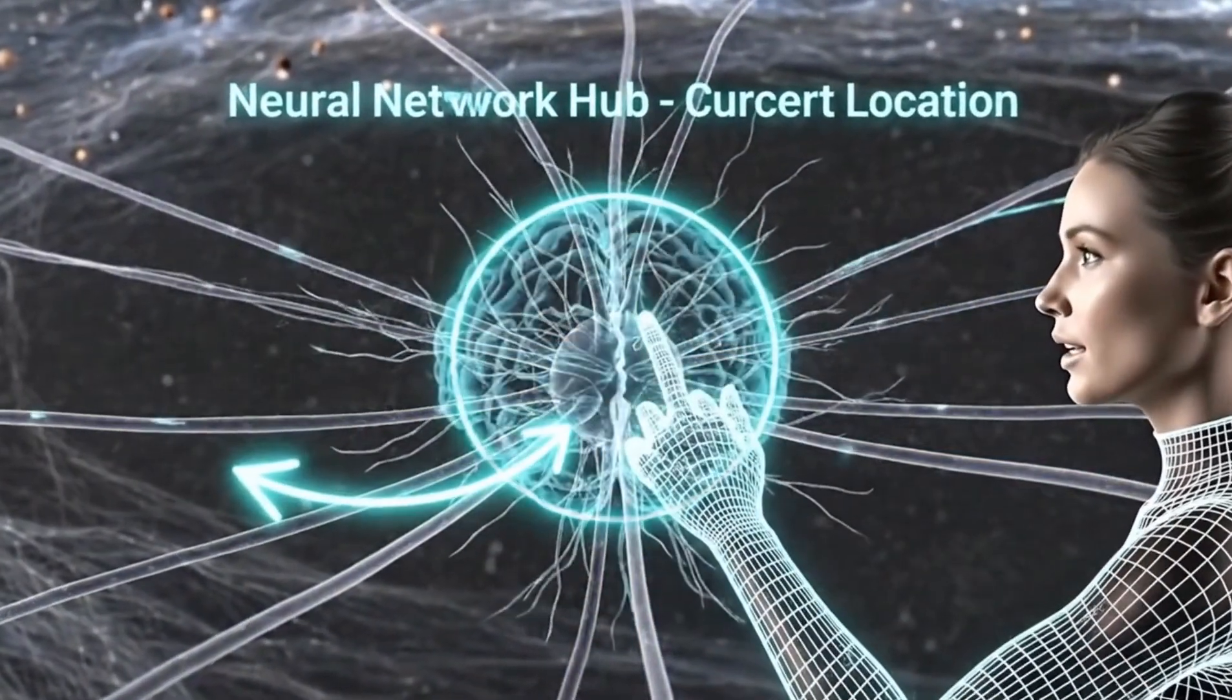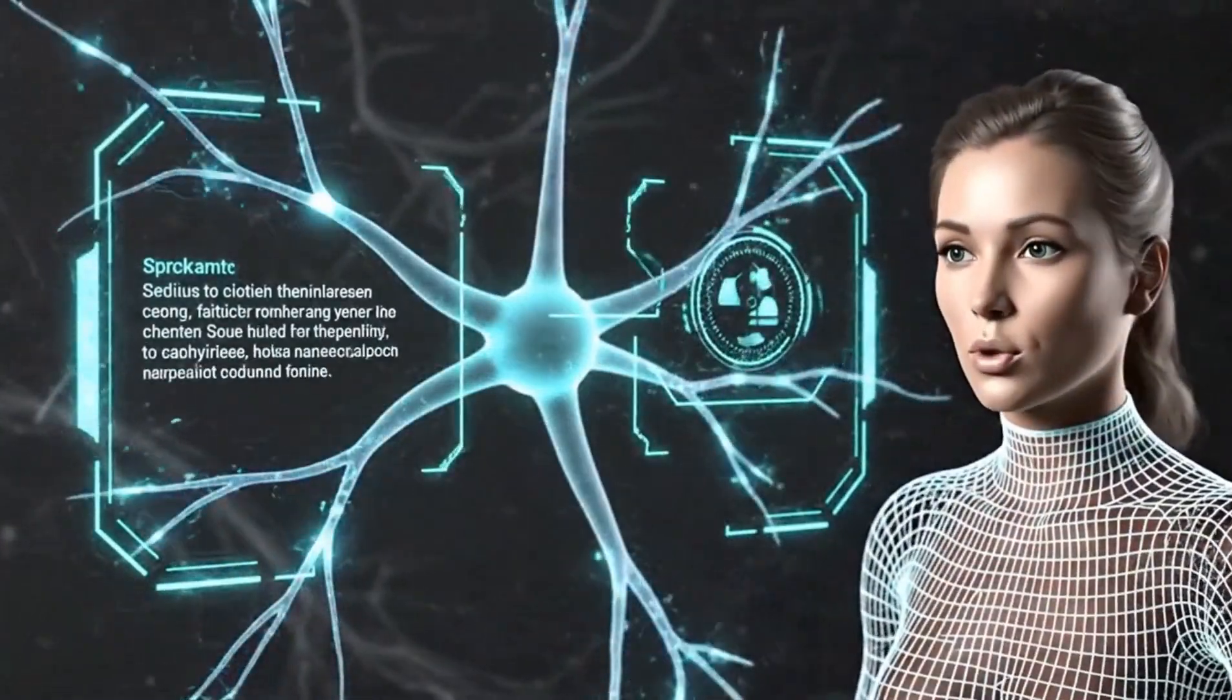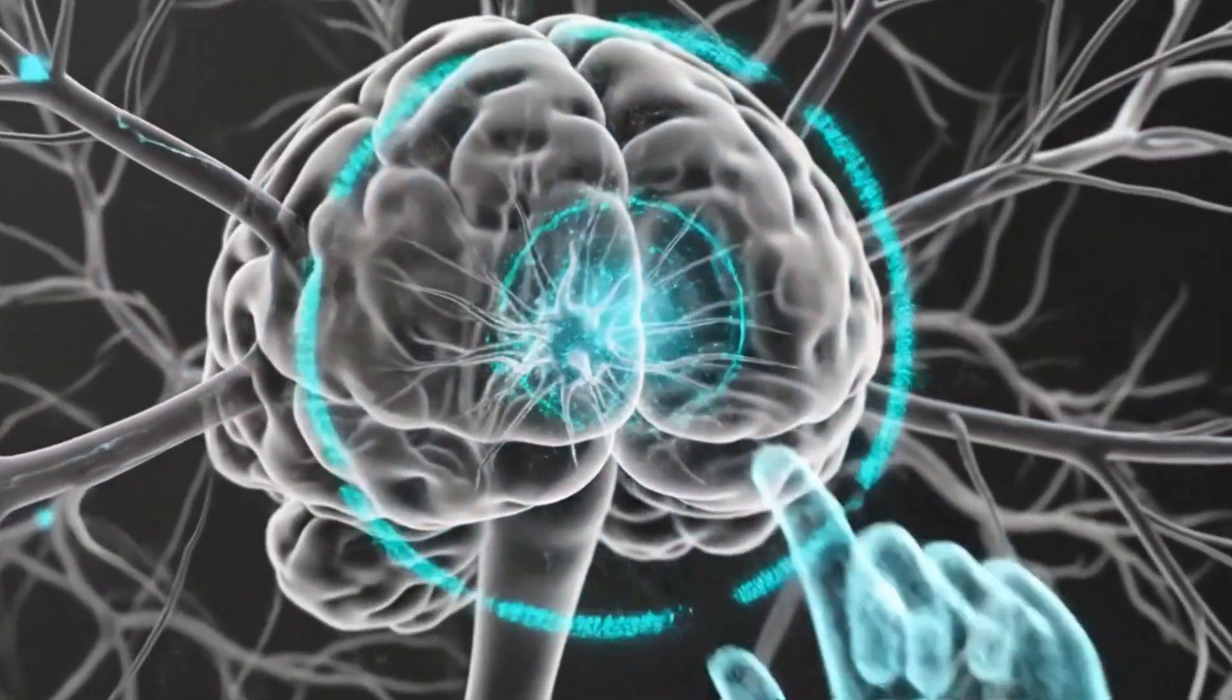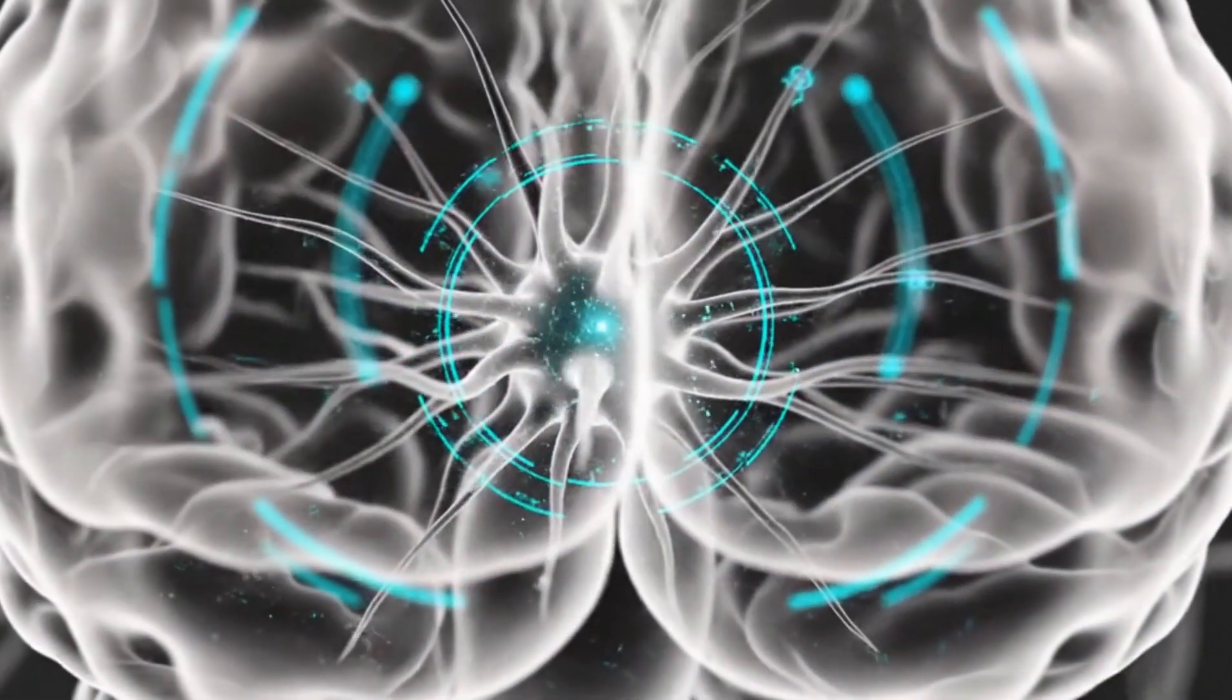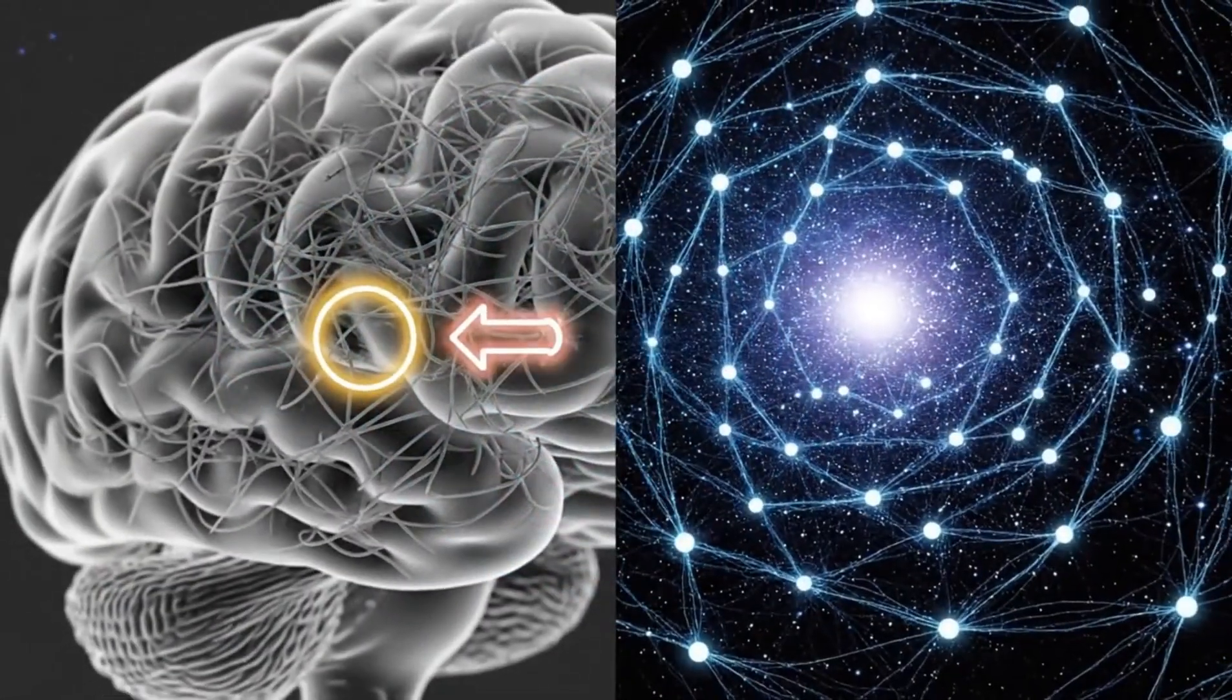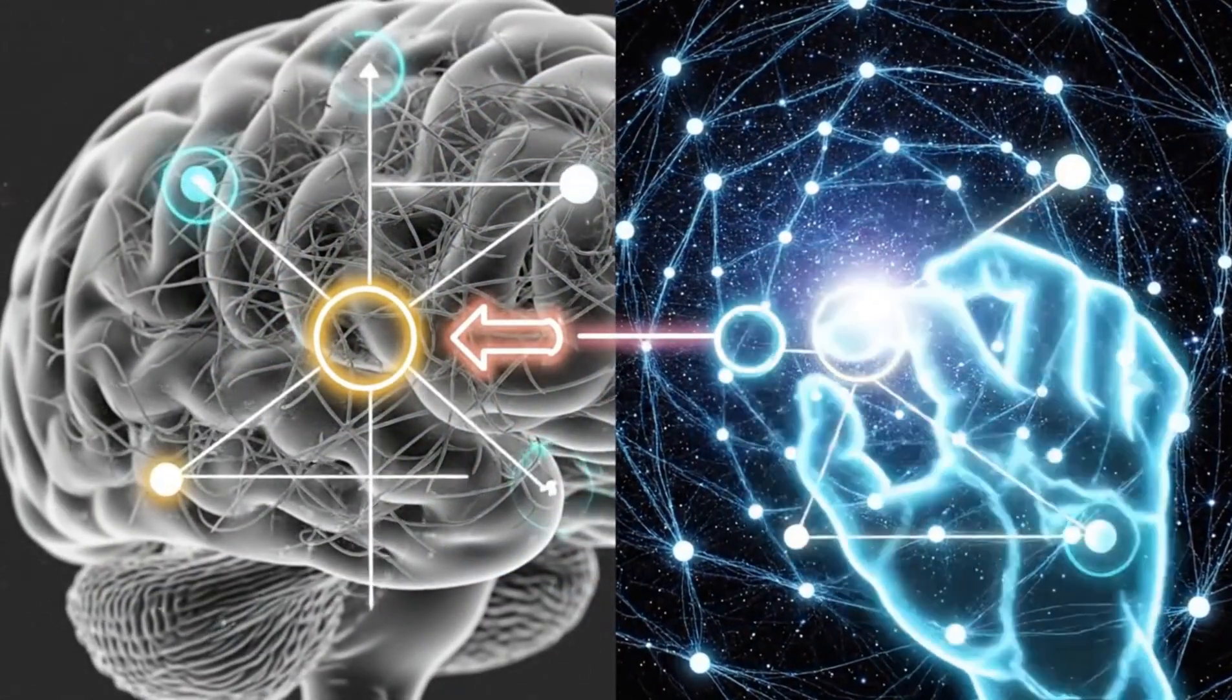Macro scale node mapped to micro scale analog. Structural similarity observed. Cortical sub-network isolated. Local processing hub selected for detailed comparison. Cross scale topology aligned. Similar network geometry observed from brain level circuits to cosmic scale structures. Confirmation.